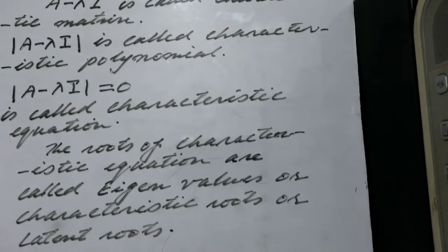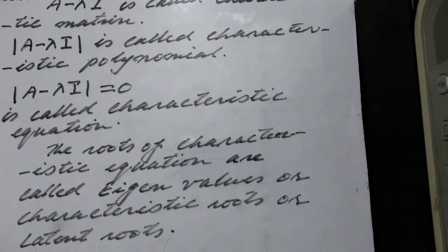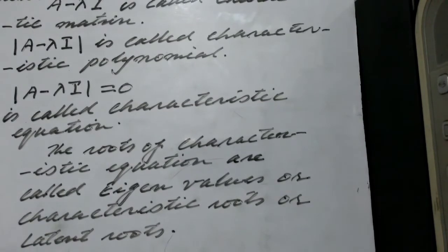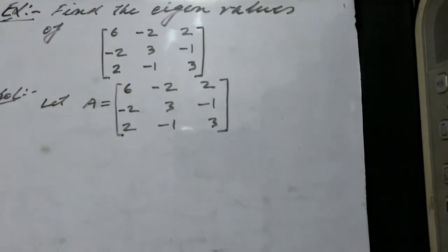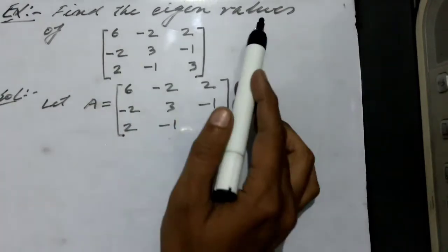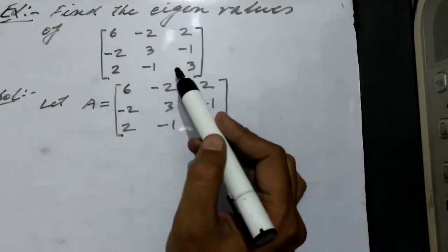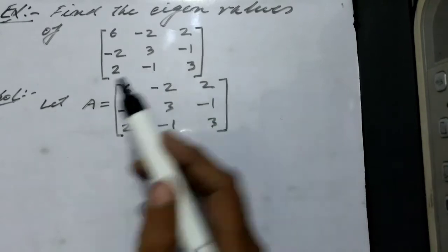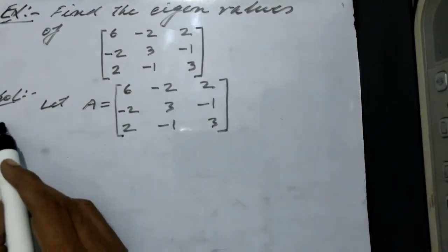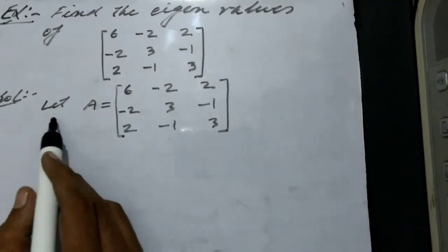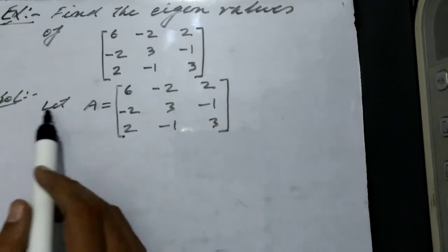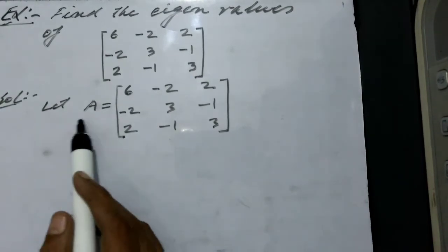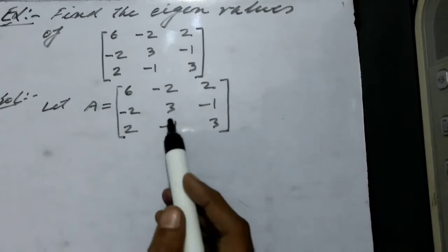This is the basic concept of eigenvalues. Now let us take an example — find the eigenvalues of this matrix. This is a square matrix, so first we assume this matrix as A.